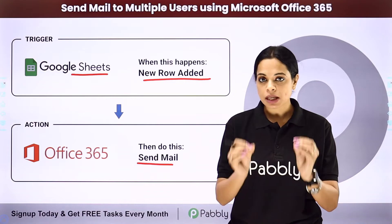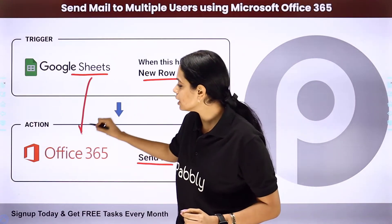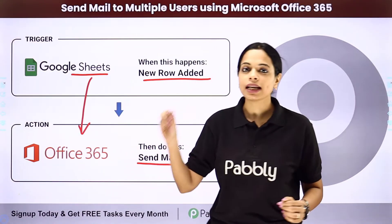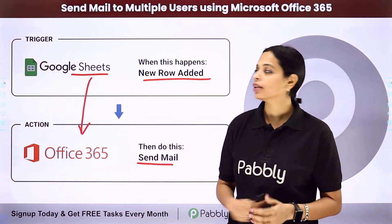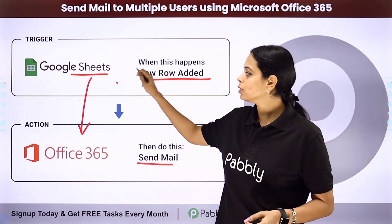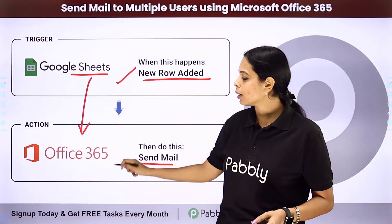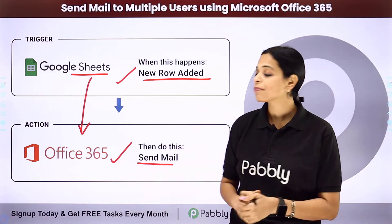For this you will have to set up some integration between the two applications, and the same thing can be done using Pabli Connect software. Your trigger application would be Google Sheet and your action application would be Microsoft Office 365.